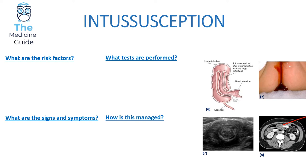Intussusception is where you have telescoping of a proximal segment of the bowel into the distal segment — if you look at the far left picture you can see a little bit of telescoping present. Risk factors include Burkitt's lymphoma, viral infection, and intestinal malrotation. With a viral infection, it's theorized that the infection will enlarge the Peyer's patch, and this acts as the leading point which promotes that telescoping structure to develop and ultimately leads to intussusception.